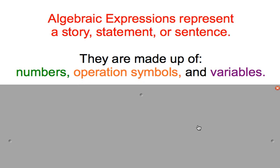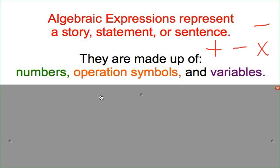Algebraic expressions are made up of three things: numbers, operation symbols, and variables. Some of you may remember back to Unit 2 when we talked about operation symbols. Those symbols include the addition sign, subtraction sign, multiplication sign, and division sign.